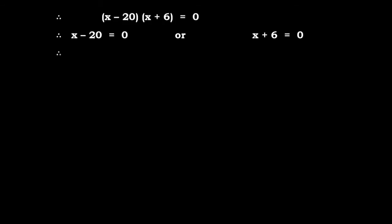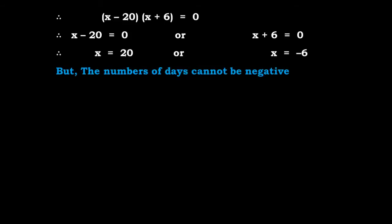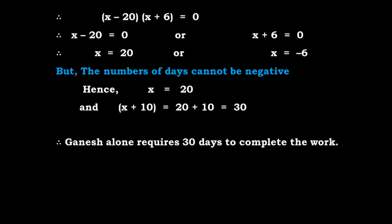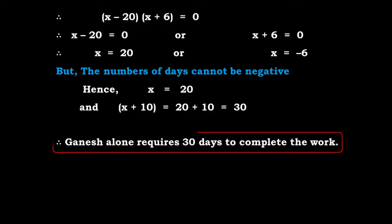Therefore X = 20 or X = −6. The number of days cannot be negative, therefore X = 20. That means X + 10 = 20 + 10 = 30. So Ganesh alone requires 30 days to complete the work.